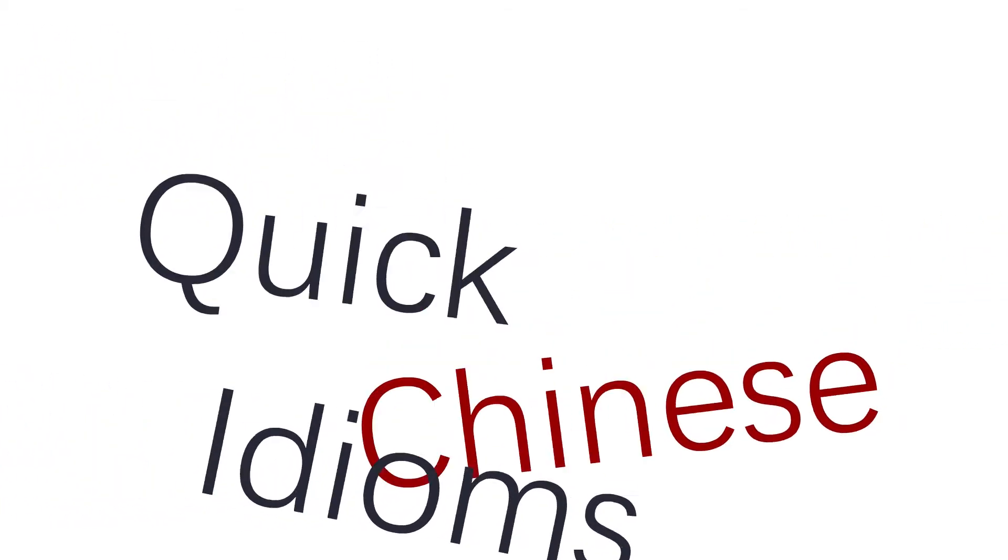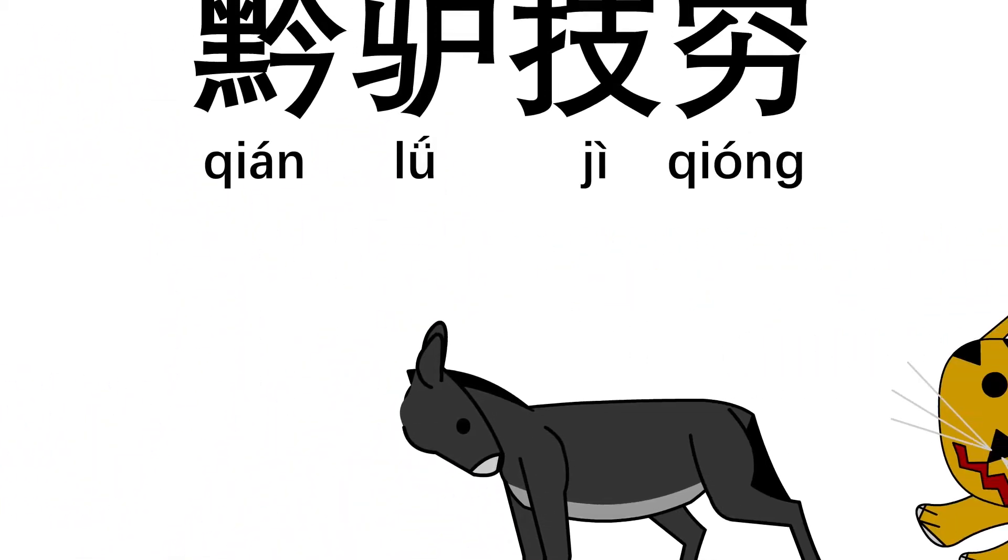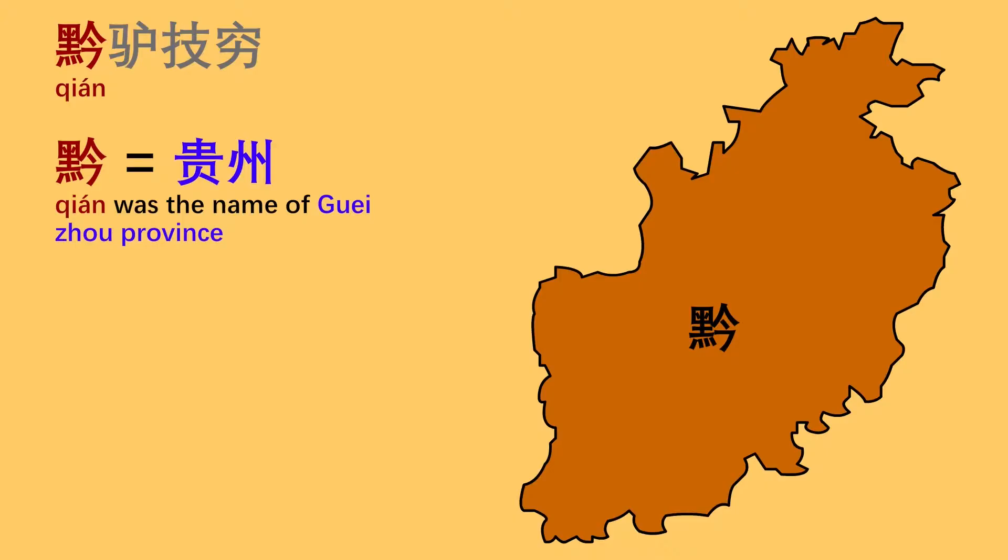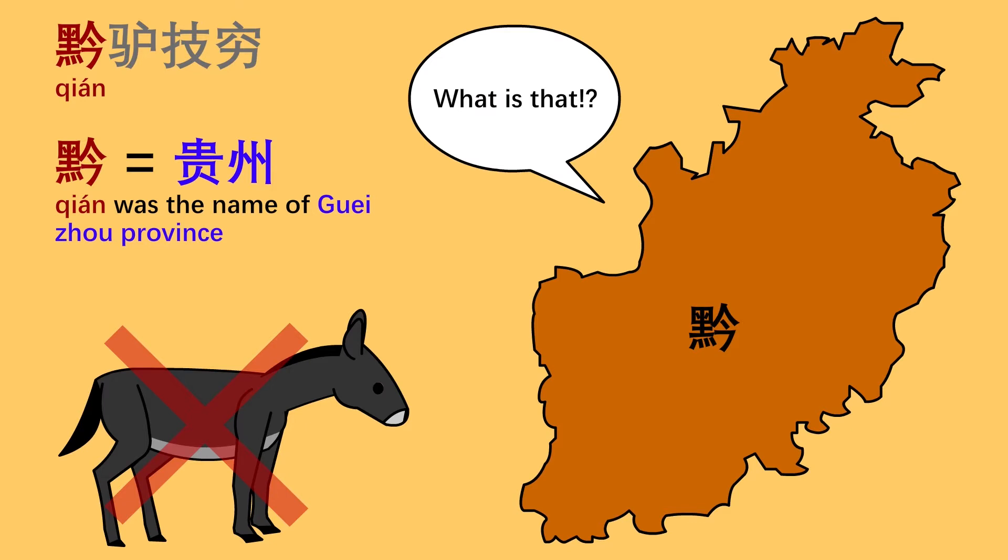This time on Quick Chinese Idioms, we will look at the idiom Qianlujiqiong. Long time ago, there wasn't any donkey in the Guizhou province of China.